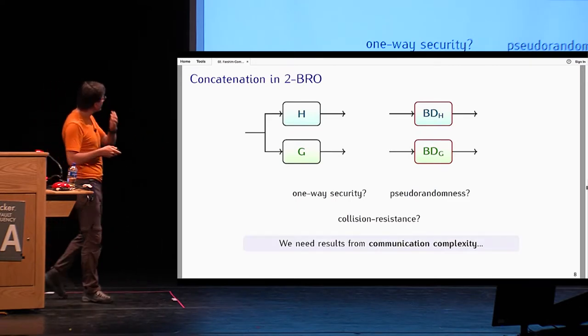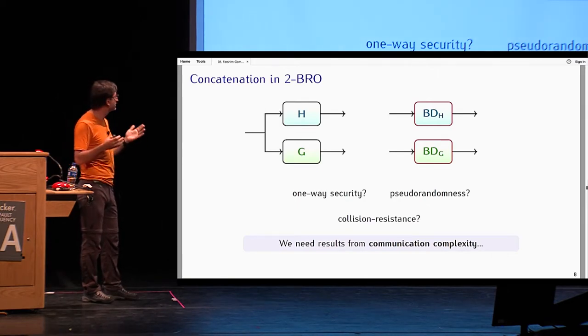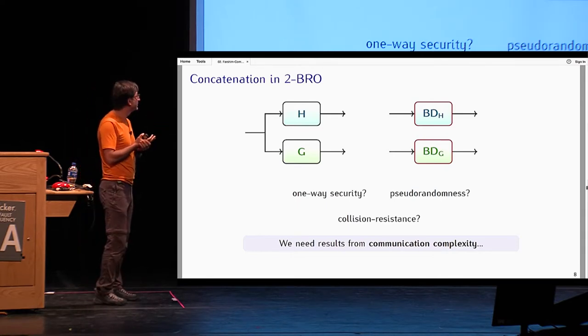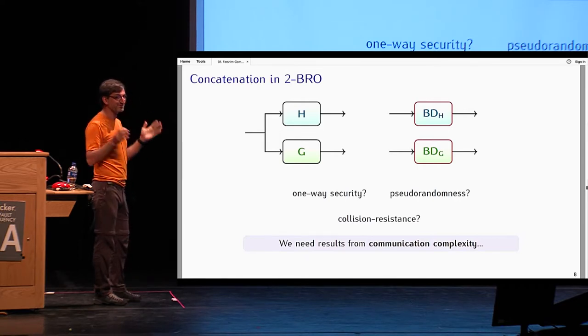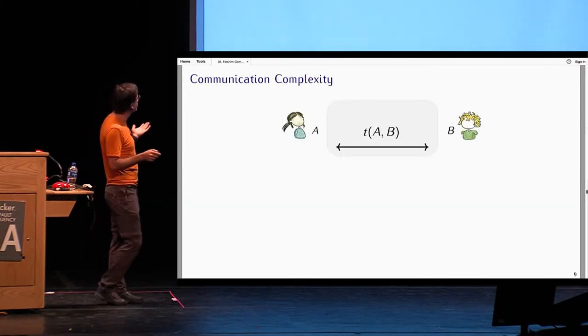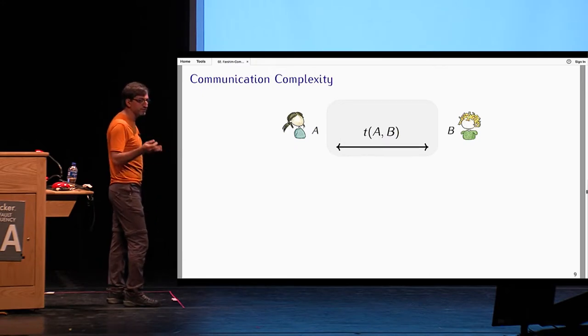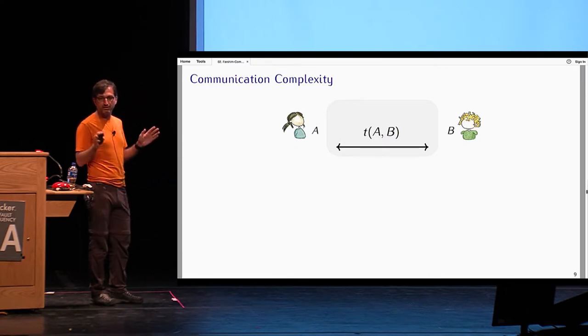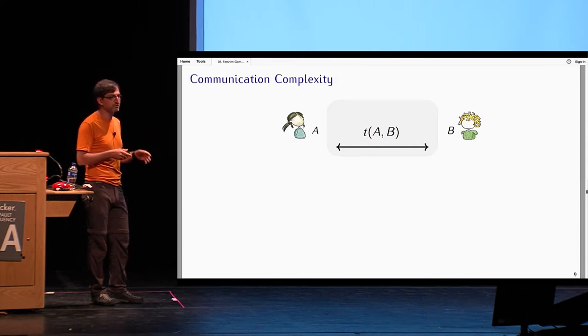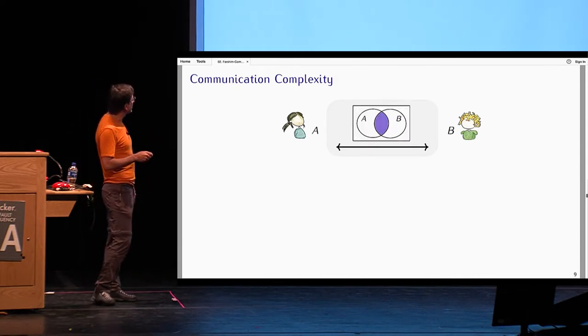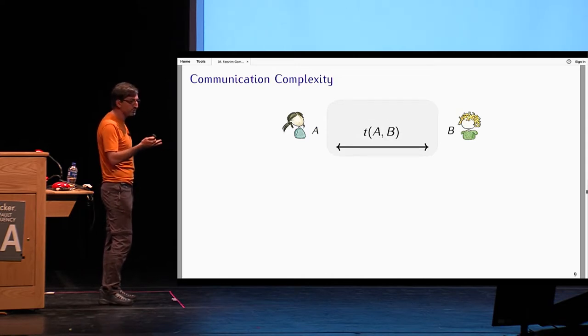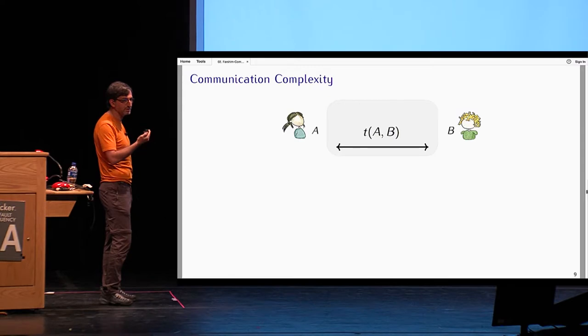Could it be the case that no adversary by cleverly choosing functions to these oracles can somehow combine the outputs and try to invert the outputs of the combined hash function? The answer turns out to be yes. For that, we need techniques from an area in complexity theory called communication complexity, which is a beautiful area which I did not know much about before. I recommend everybody to look at this area. In communication complexity, we have two parties, Alice and Bob, and they want to compute some task of A and B, some function of A and B.